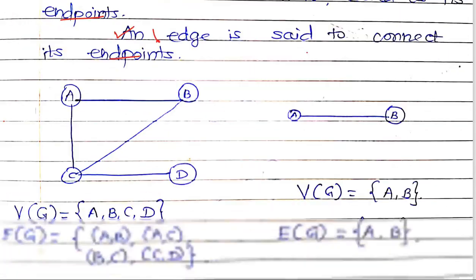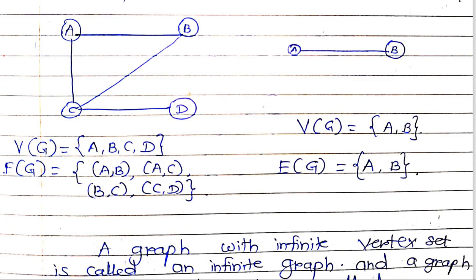If you see the example of a graph, this is a simple graph where A, B, C, D are the vertices. The connecting links between the vertices are called edges. So these are the vertices A, B, C, D, and these are the edges.